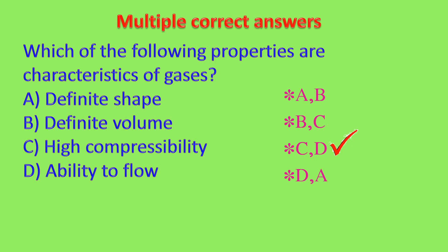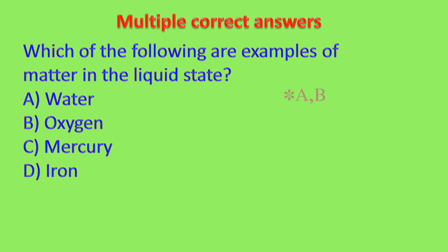Let us see another question. We have to find the matter which is in liquid state. Water and mercury are in liquid state. So the answer is C and A. That is the correct answer — two correct answers are given.